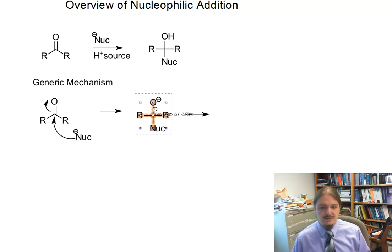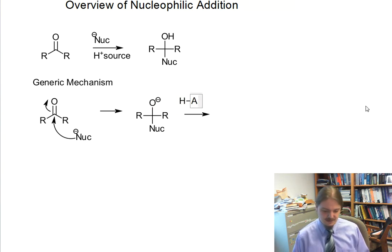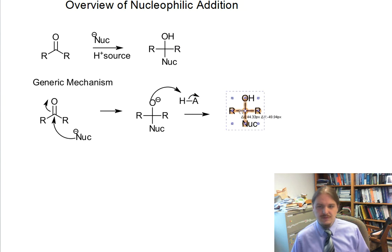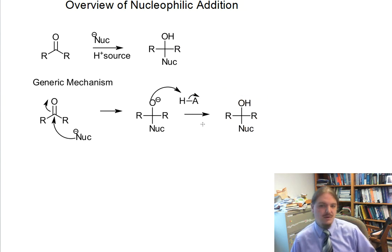which is probably not what we want. So now we need our proton source. Something that can be an acid of some kind. So we use a generic HA at the moment. Proton transfer. Pick up an extra proton. Generate our alcohol product.